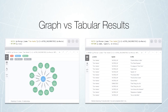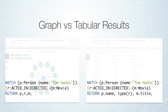A little bit more on syntax. You may have noticed in some of the tutorials or guides that you can get back both graphs as well as tabular results. Here is an example executed in the Neo4j browser. On the left hand side, we are returning the person nodes, the relationships, whether the relationship is an acted-in or a directed relationship, as well as the movies. In that case, we are going to get a graph returned.